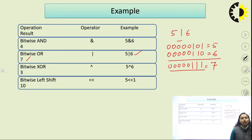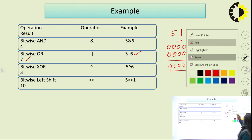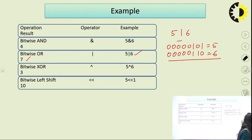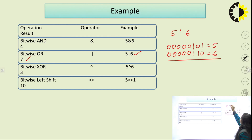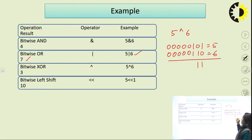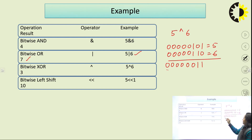For XOR operation, when the two bits are different in nature we get 1; if both bits are the same we get 0. Performing 5 XOR 6: bits 1 and 0 are different so result is 1, 0 and 1 are different so result is 1, 1 and 1 are the same so result is 0. The final result is 00000011, which is 3. So 5 ^ 6 equals 3.